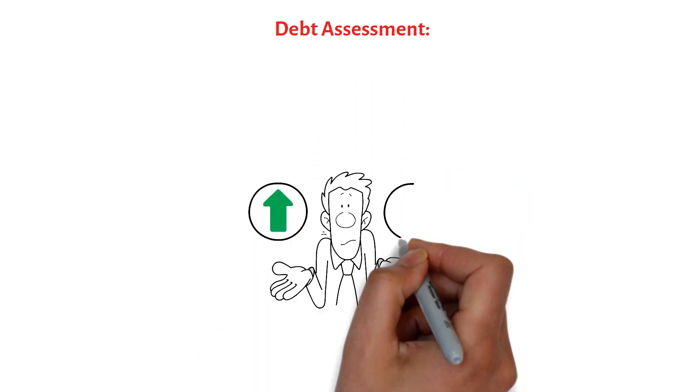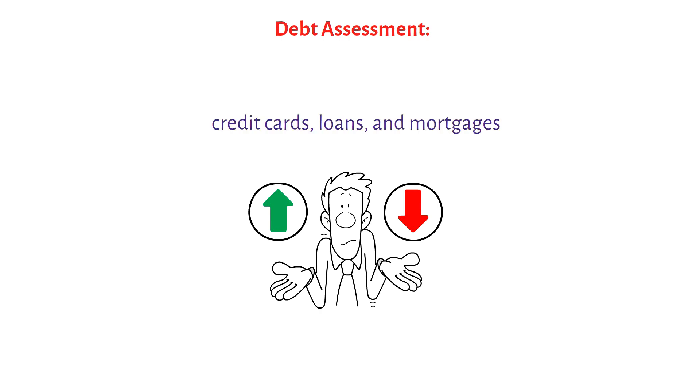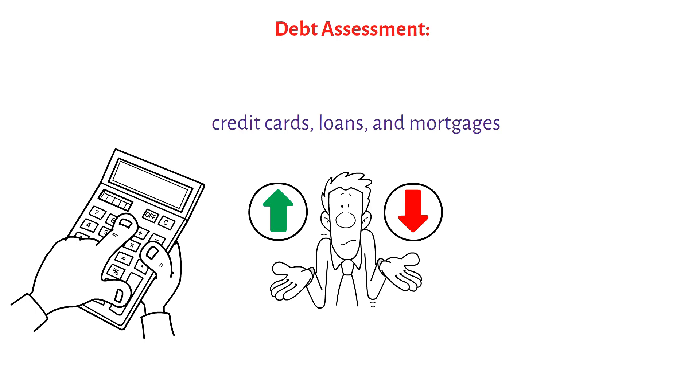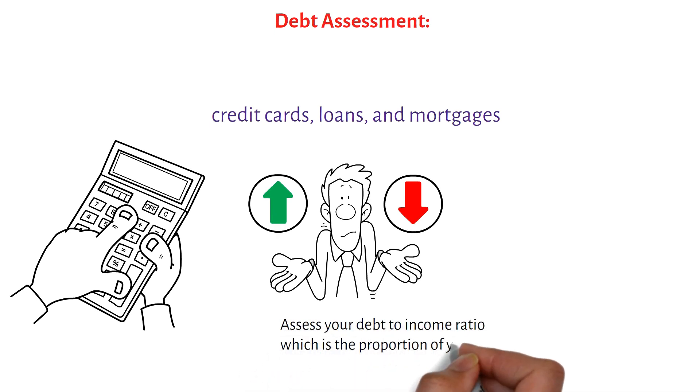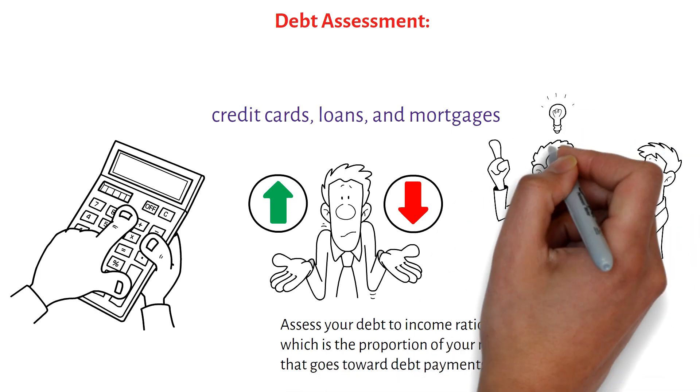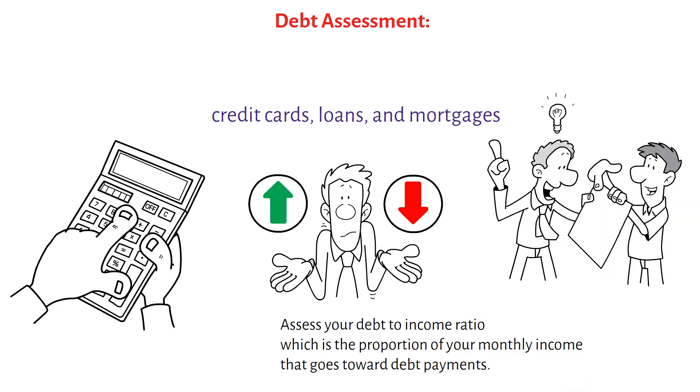Debt assessment. Evaluate your outstanding debts, including credit cards, loans, and mortgages. Determine the total amount owed, interest rates, and monthly payments for each. Assess your debt-to-income ratio, which is the proportion of your monthly income that goes toward debt payments. If your debt burden is high, consider developing a repayment plan to prioritize and systematically pay off your debts.